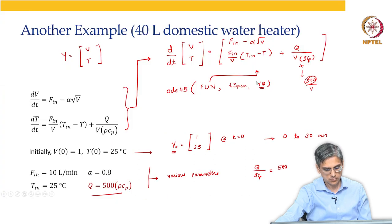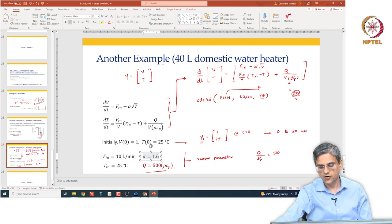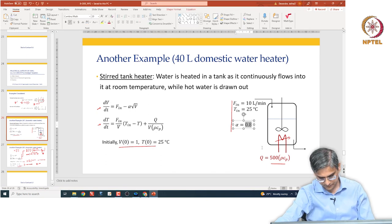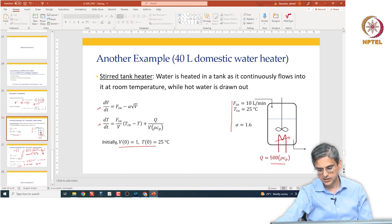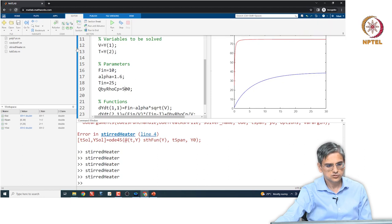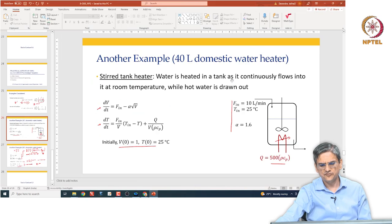These were our original parameters 1.6 and so on, and this is the result that we get. Let us go back to our PowerPoint and make the change. This was an incorrect parameter. Let us make the change in that parameter to correctly reflect what a 40 litre domestic vessel will behave like. This gives you a little bit of an idea about how to solve problems where you have multiple ODEs, which are all of first order in nature. Again, the values of parameters are not so important. What is really important is the procedure that we have used in order to solve this problem.